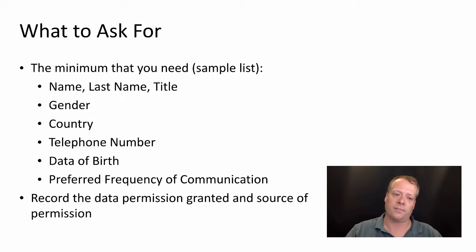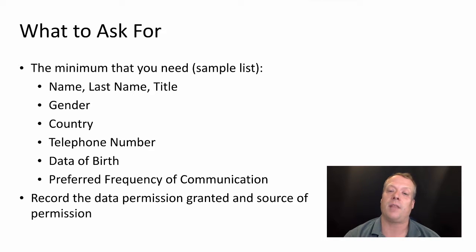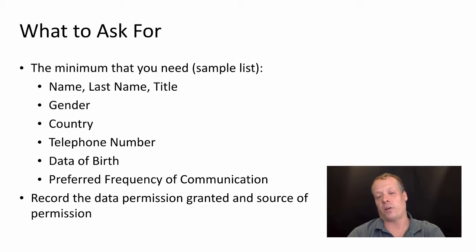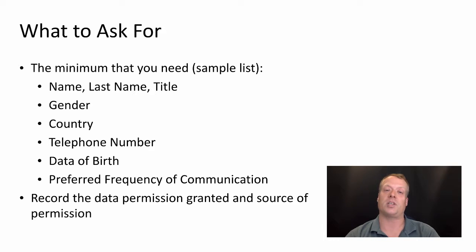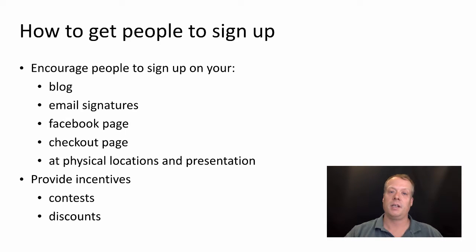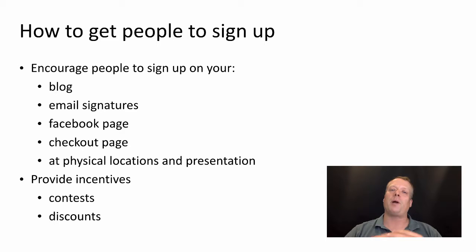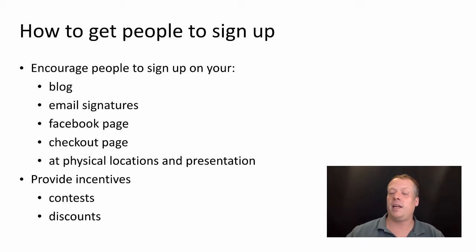When asking people to sign up for email, the minimum information you need includes name, last name, and title, but you can also collect gender, country, telephone number, date of birth, and preferred frequency of communication. Always record the date permission was granted and the source of that permission as evidence. Ask for only the minimum information needed to contact the user. You can encourage sign-ups on your blog, through email signatures, on your Facebook page, at checkout, and at physical locations and presentations.